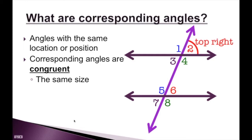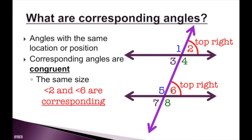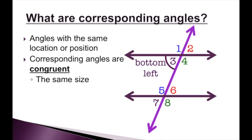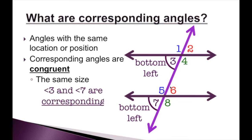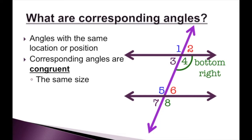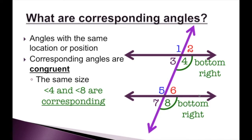Angle two is the top right angle. The other top right angle is angle six, so angles two and six are corresponding — therefore they are congruent. Angle three is the bottom left angle, and angle seven is also a bottom left angle, so angles three and seven are corresponding, making angle three congruent to angle seven. Angle four is our bottom right angle for the top group, and angle eight is the bottom right angle for the bottom group. They share the same position, so angles four and eight are corresponding and congruent.